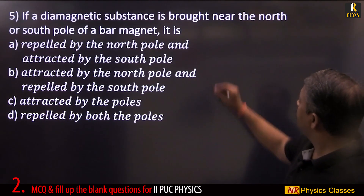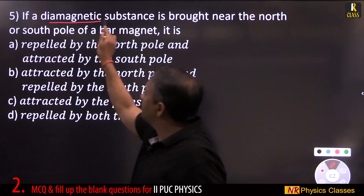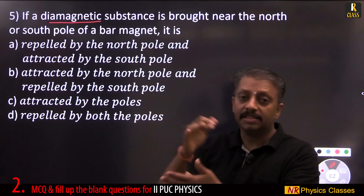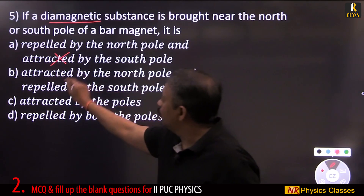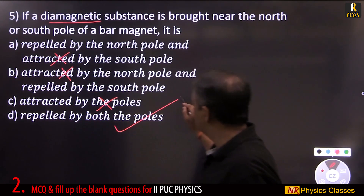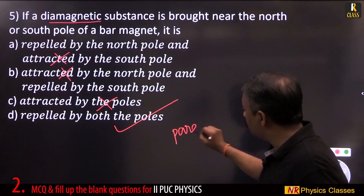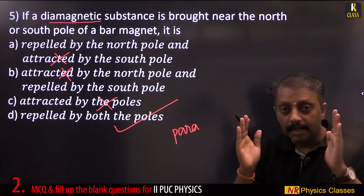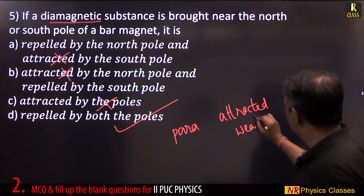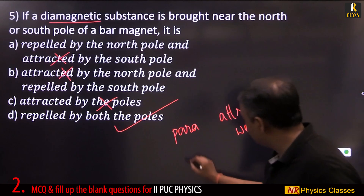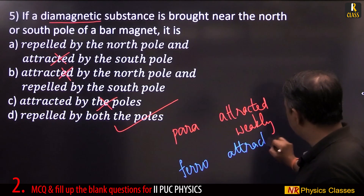If a diamagnetic substance is brought near the north pole or south pole of a bar magnet, it is repelled by both poles. Recall: diamagnetic → repelled; paramagnetic → attracted weakly; ferromagnetic → attracted strongly.